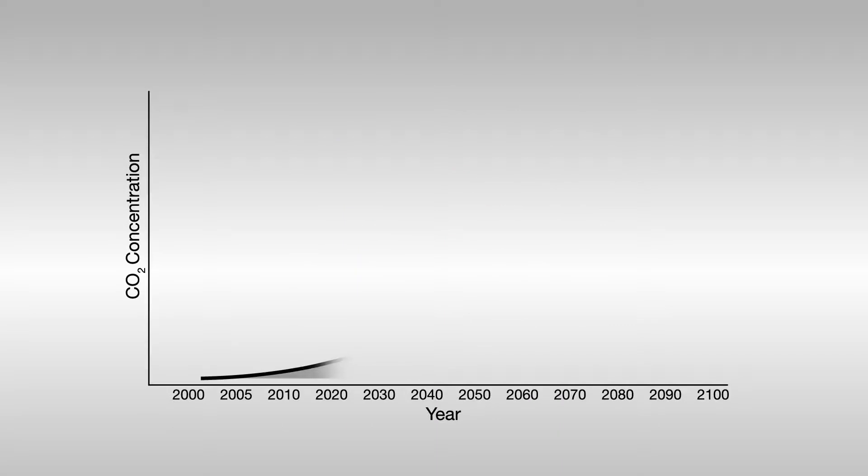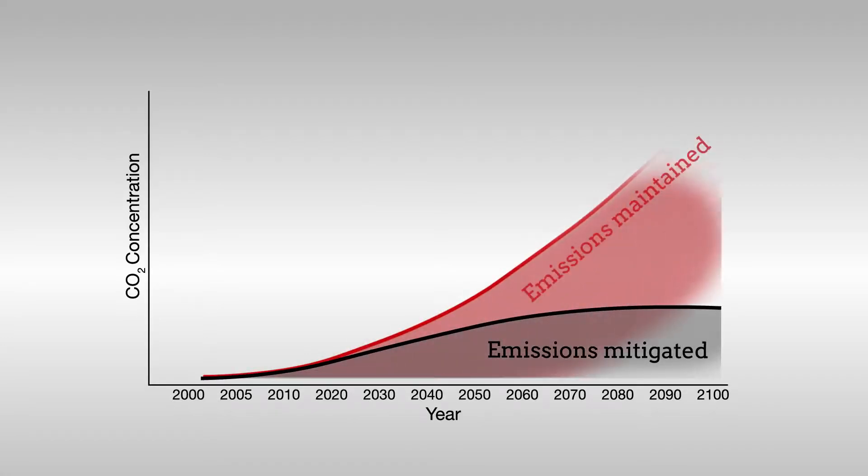To predict how future climate change would affect wet bulb temperatures in this area, and thus the ability of residents to adapt, a regional climate model was run under two different scenarios: one in which the emission of greenhouse gases is mitigated in the near future, and one in which the current pace of emission is maintained.